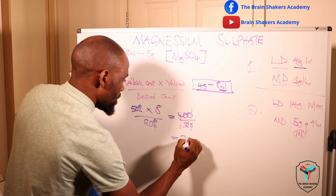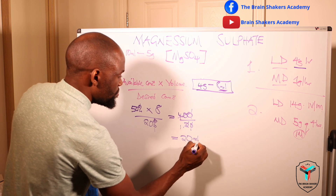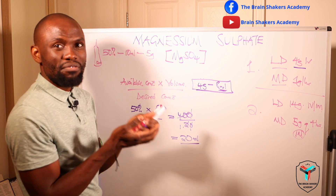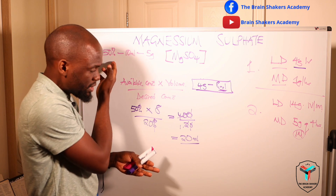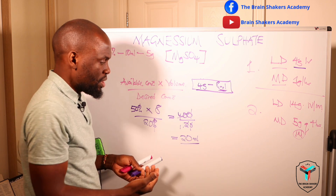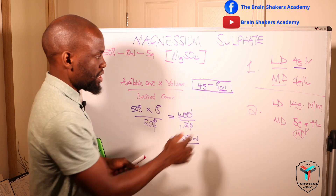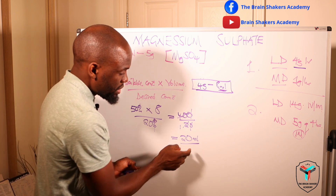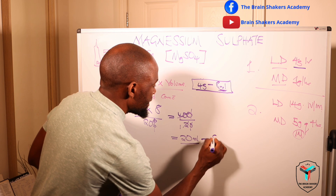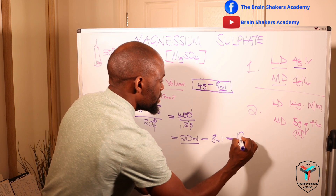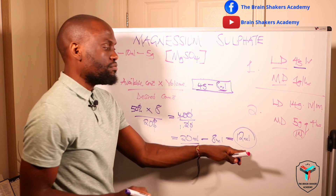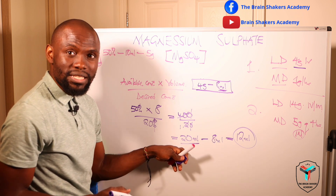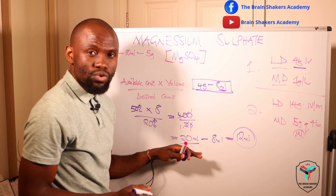To find how much of the total 20 mL is diluent: take the total volume (20 mL) and subtract the drug volume (8 mL), giving you 12 mL. So you add 12 mL of diluent to the 8 mL of 50% magnesium sulfate to arrive at 20 mL total volume at 20% concentration. This is what you administer intravenously.